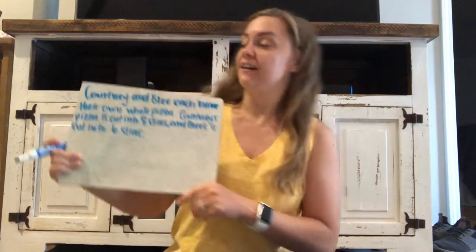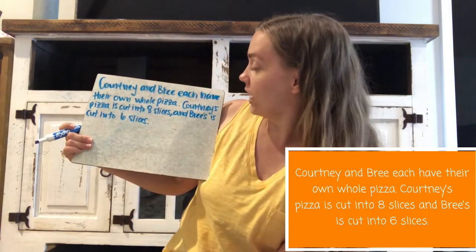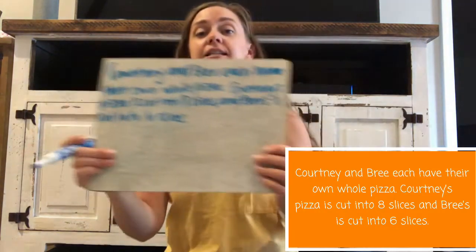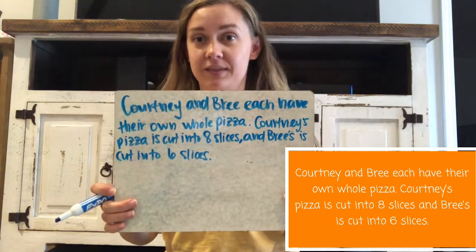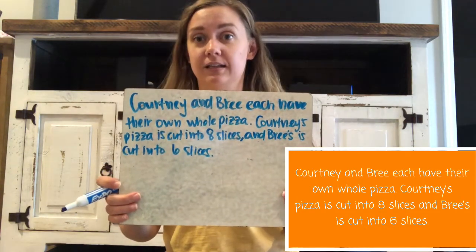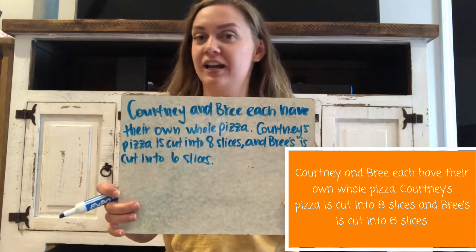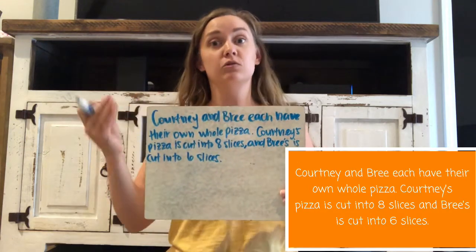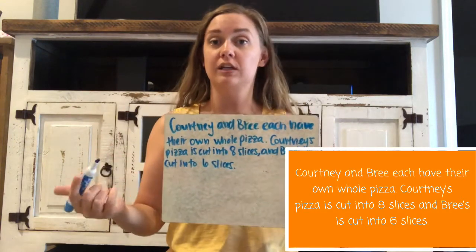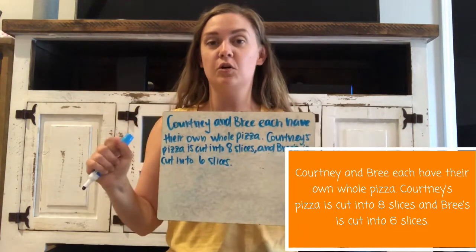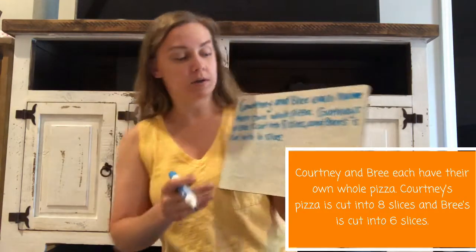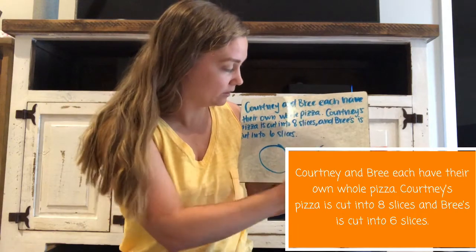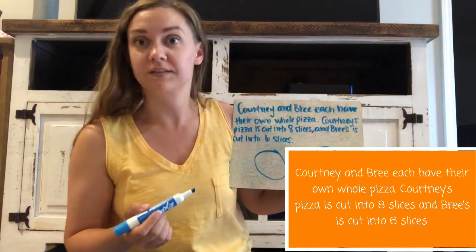We're smart and we can do it! This one says that Courtney and Bree each have their own whole pizza. Courtney's pizza is cut into eight slices and Bree's is cut into six slices. The first thing I want to do is draw a picture — you all said that with me because you know that's exactly what we're supposed to do. Anytime we have things we can draw, we always need to draw a picture first. So I'm going to draw Courtney and Bree's pizza, and I'll assume they're probably the same size.